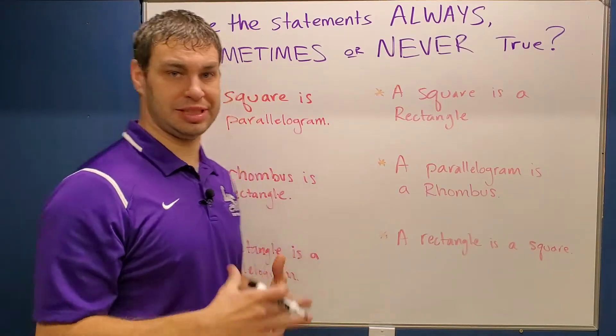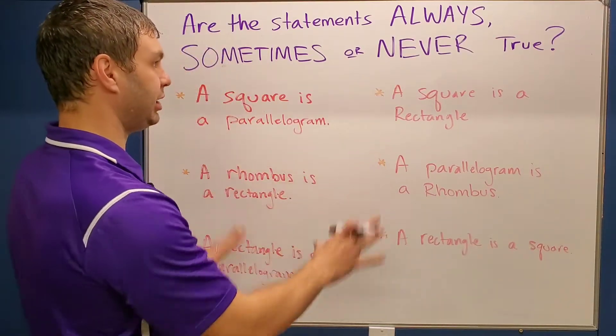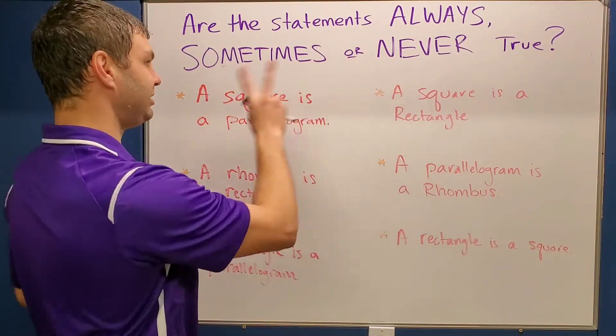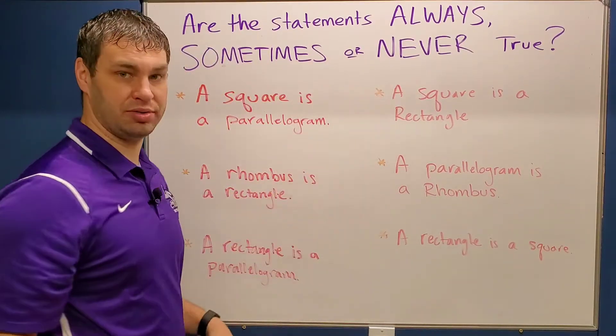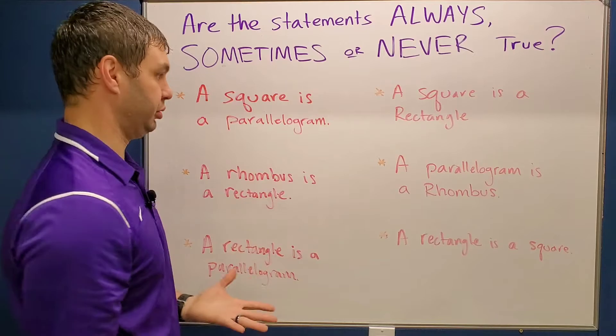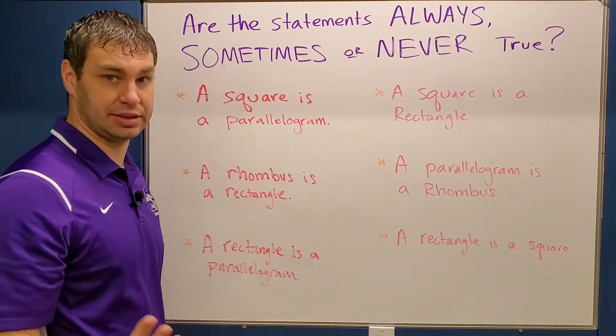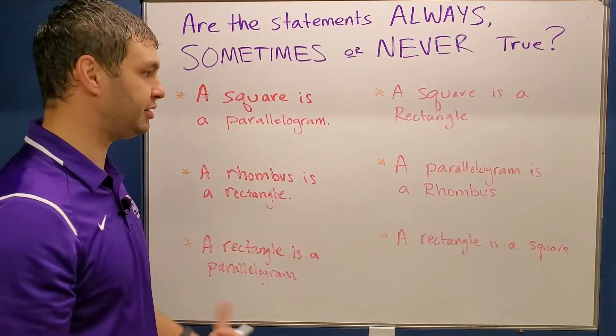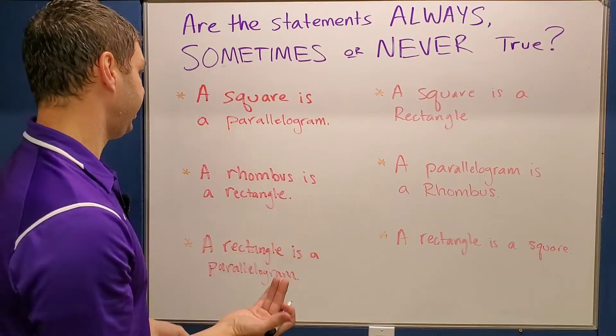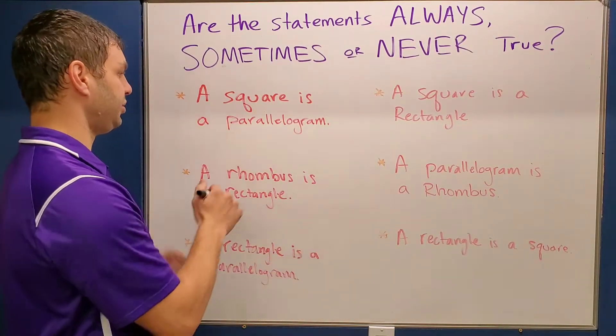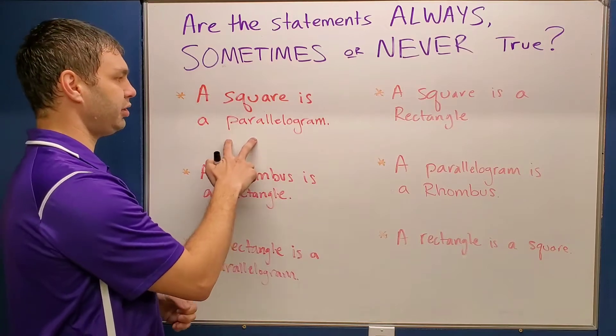The directions for these problems say to answer the following with always, sometimes, or never true. We have six problems here. Let's go through them one by one and see if they are always, sometimes, or never true.